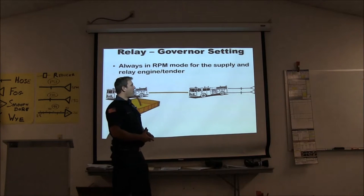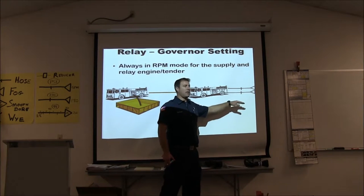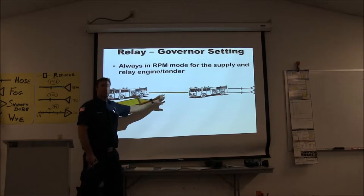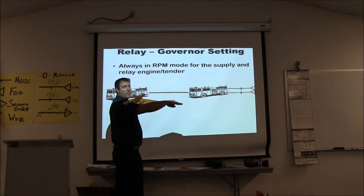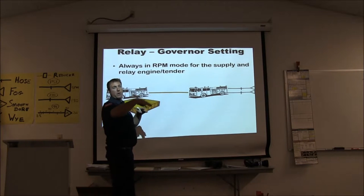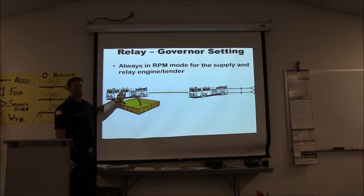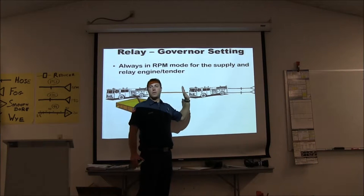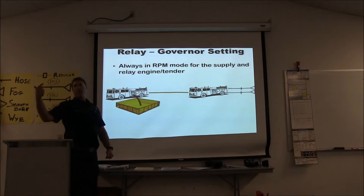The reason we use RPM in relay: both governors will sense an increase and decrease in flow as lines open and shut. If both engines are in PSI mode, both pressures fluctuate based on flow and they end up working against each other. By putting the relay engine in RPM mode, it essentially becomes a hydrant — as the attack engine increases or decreases flow, the relay engine's intake pressure changes, but that's fine, just like pumping from a hydrant. Relay RPM, people PSI.